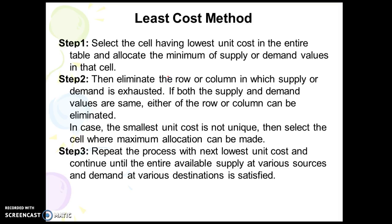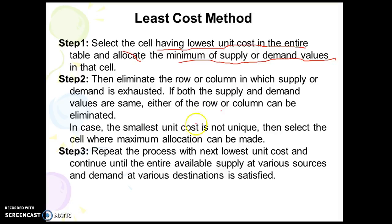The next method is the Least Cost method. Instead of choosing the northwest corner cell, we select the cell having the lowest unit cost in the entire table and allocate the minimum of supply or demand values in that cell. Then we eliminate the row or column in which supply or demand is exhausted. If both supply and demand values are the same, either the row or column can be eliminated.